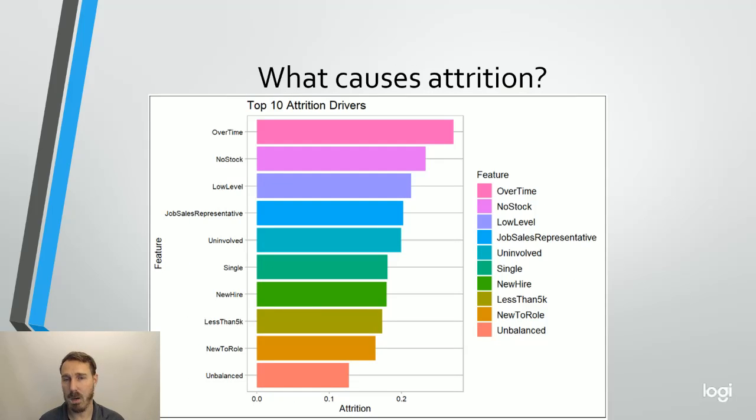What about attrition? Overtime, no stock, low level. We need to be cautious with this one because we're going to have to look a little deeper. Overtime, no stock, and low level look like they could be collinear, which tells me my low level employees are probably the ones working overtime and they're probably not getting stock options. So those might be all telling me the same thing there. So we might have to dig a little deeper at something like whether or not they're involved or they're new to the role.